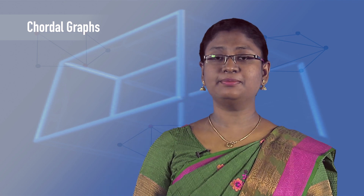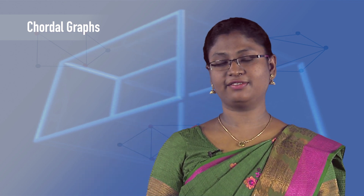In this module we have seen about chordal graphs, simplicial vertices, and related examples. Through simplicial vertices we have seen the characterization of a chordal graph, perfect elimination orderings, and an algorithm to find a perfect elimination ordering, along with related theorems. I hope this module will be useful to you. If you want to try more examples, you can find them in the script. Thank you, and we will meet again in the next module.